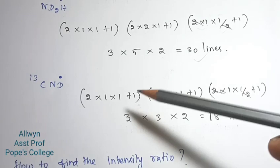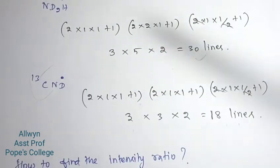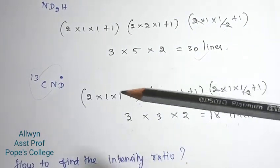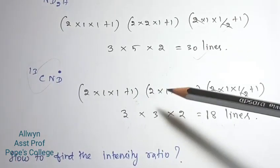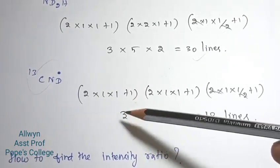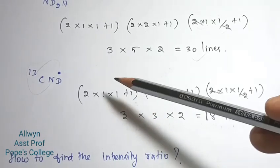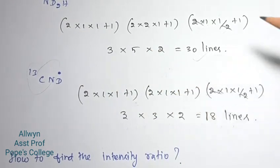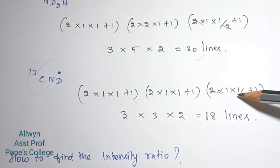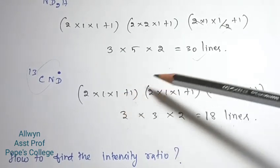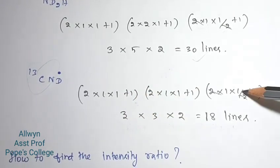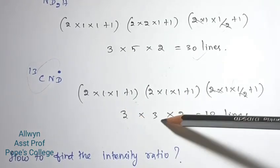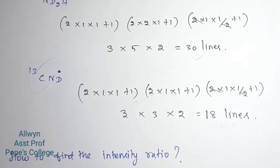That's for C and D. C13 is active with I = 1/2, and nitrogen has I = 1. For carbon: 2×1×(1/2)+1 = 2; for nitrogen: 2×1×1+1 = 3. Then 3 into 2 = 6 — so totally 18 lines.